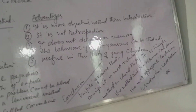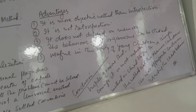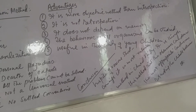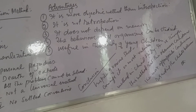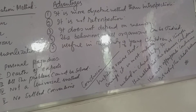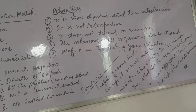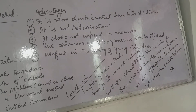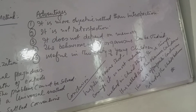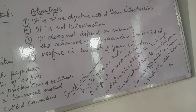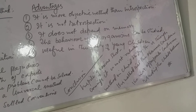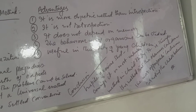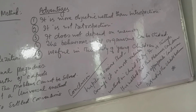Number four: the behavior of all organisms can be studied through this method. Introspection cannot be applied on young children or animals, but this method can be applied on all organisms — children, animals, or living beings. Number five: it is useful in the study of young children. This method is of vital importance in the study of children because they are not asked to introspect; only their external behavior is taken into consideration.